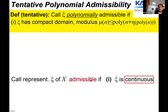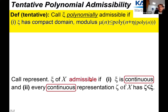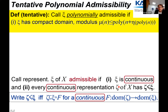This is our second draft definition: a representation is polynomially admissible if it has a compact domain as before, and has a modulus of continuity which is polynomial in n plus the entropy — and we allow polynomial transformation on the argument to the entropy, which gives nicer closure properties. That's our tentative first part of the definition of polynomial admissibility, a quantitative strengthening of the qualitative admissibility of Kreitz and Weihrauch.